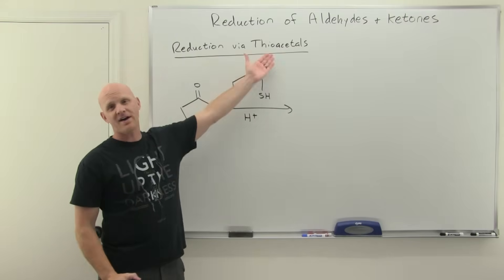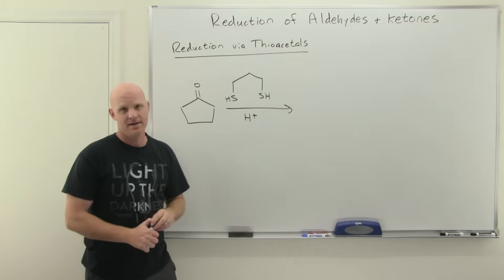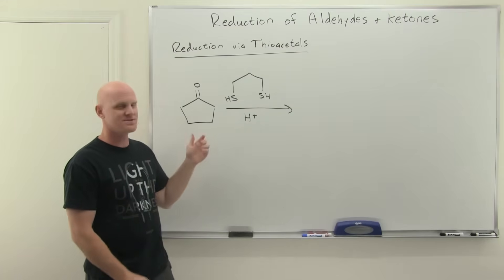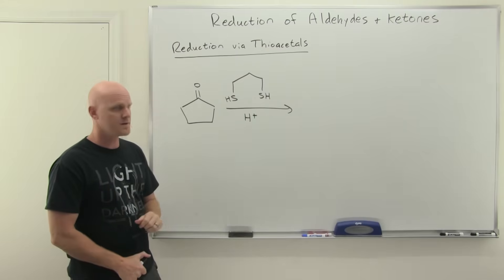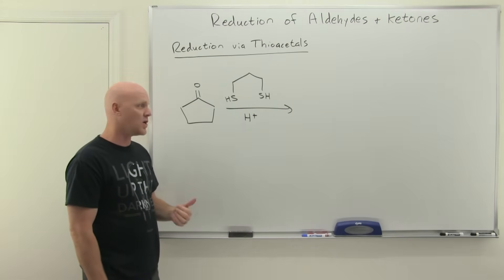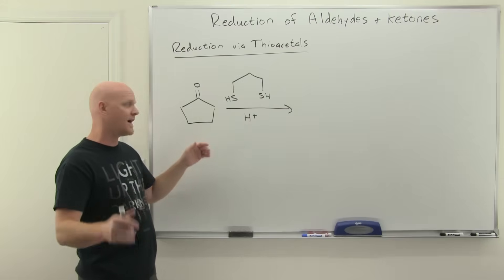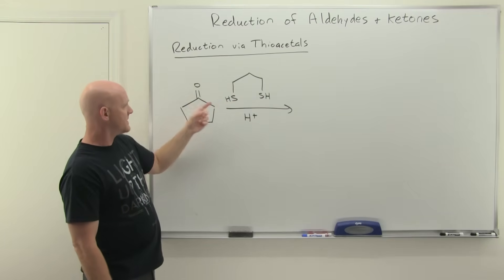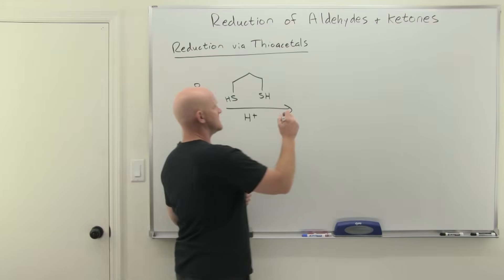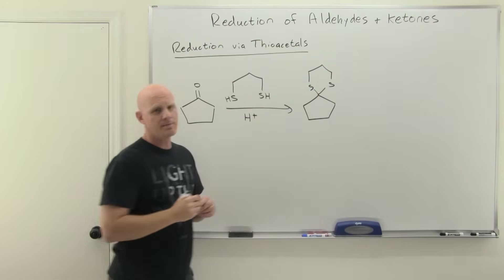The last reduction reaction is via thioacetals. Thioacetals are analogous to acetals but with sulfur atoms instead of oxygen. Not all of you will learn this reaction, so if this is unfamiliar, skip to the end. It works very similar to forming a cyclic acetal with ethylene glycol. The mechanism is totally analogous. You'd end up forming a thioacetal.